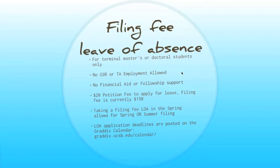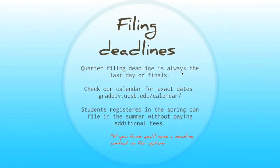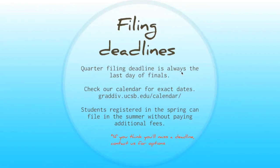The application deadlines are posted on our calendar on the GradDiv website, as well as all of the filing deadlines. Filing deadlines are generally the last day of finals for a quarter, but be sure to check our calendar for the exact dates. If you think you're going to miss a deadline, contact us for your options. These deadlines are non-negotiable, but sometimes there are a couple of extra days where we can help you out so you won't have to pay fees for the following quarter.